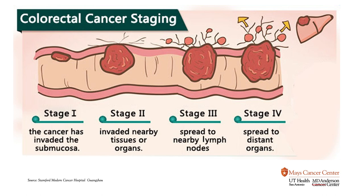If we look at colon cancer staging, stage one is when the cancer has invaded the submucosa or the first lining of the wall of the colon. Stage two is when the cancer starts to invade a little further into the neighboring tissues, mostly the peritoneum or the tissue that surrounds the colon. Stage three is when the cancer spreads to the lymph nodes. And stage four is when the cancer spreads to other organs like the liver or lung — that's when it's called metastatic.